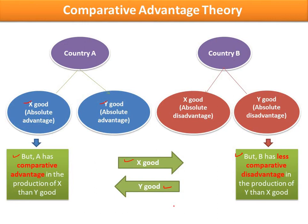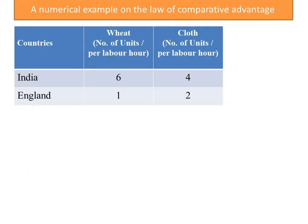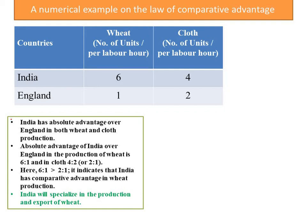Let us see all this with the help of a numerical example. In this table, India can produce six units of wheat using one labour hour and four units of cloth with one labour hour. On the other hand, England can produce one unit of wheat and two units of cloth using one labour hour in each good. Here we assume that all labour units are homogeneous.